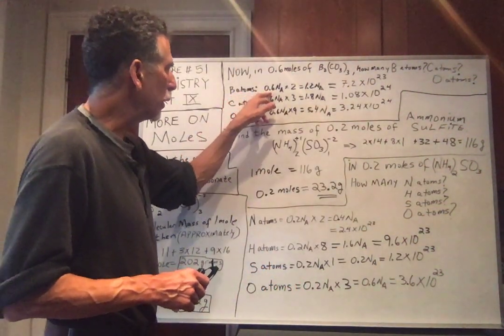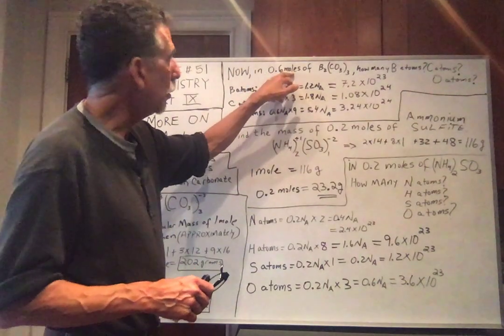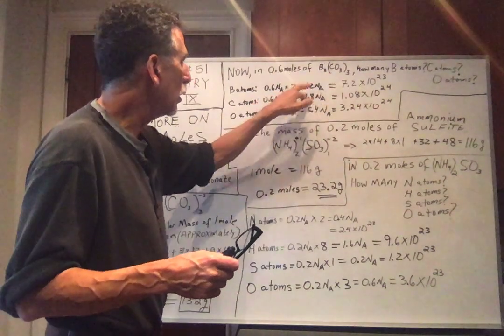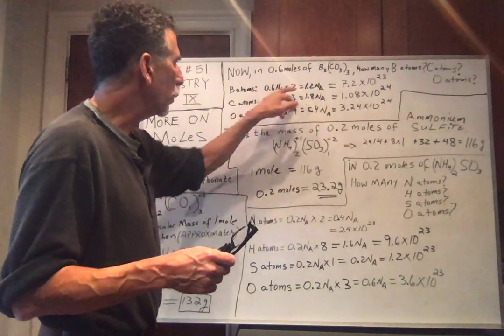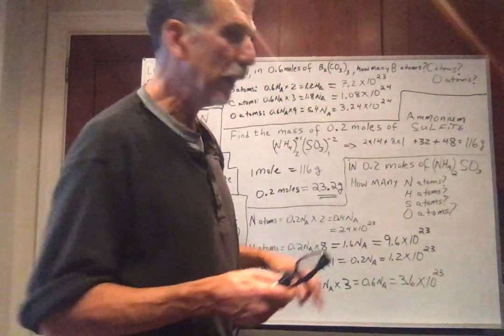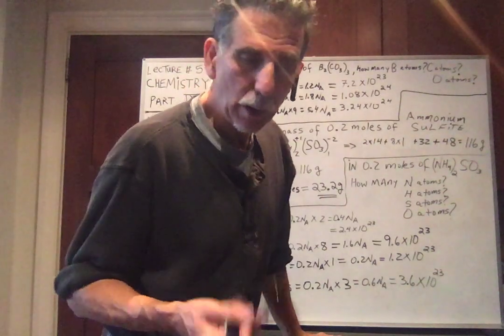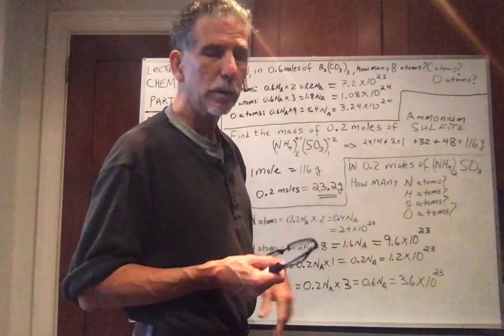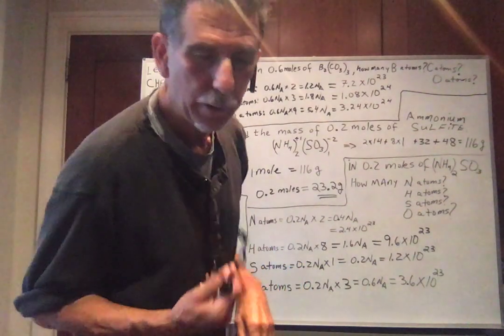So boron atoms. We have 0.6 NA, 0.6 moles, times we had 2 boron atoms. So times 2. 2 times 0.6. 1.2 NA. But remember NA is 6 times 10 to the 23rd. So when we multiply that we get 7.2 times 10 to the 23rd.